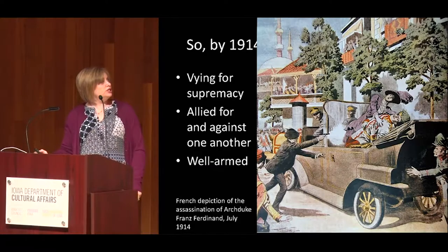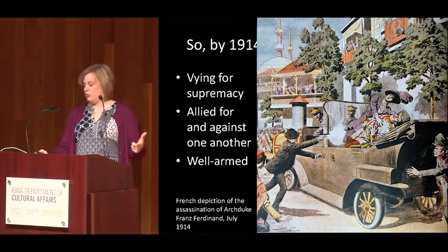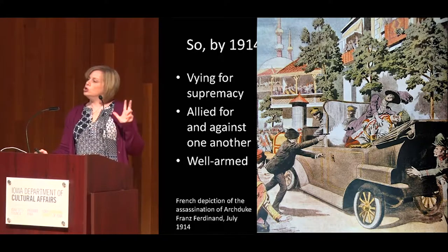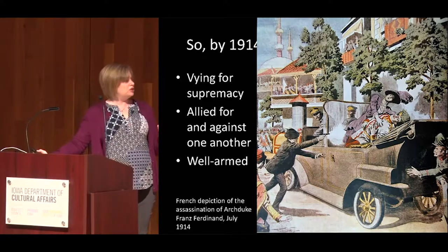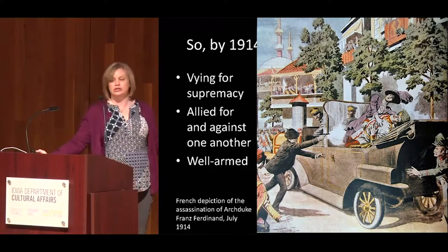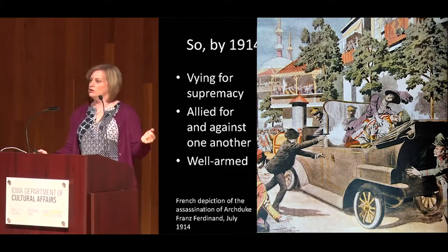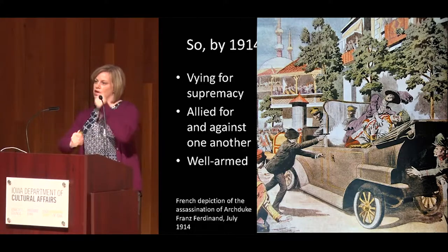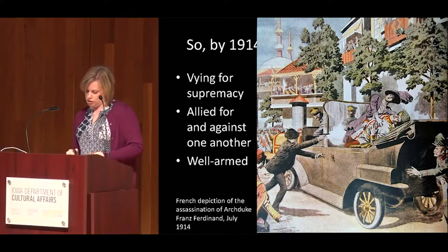So by 1914, European nations were: one, vying for supremacy; two, allied against and with one another; and three, really well armed. So when Archduke Franz Ferdinand of the Austro-Hungarian Empire and his wife Sophie are assassinated by a Serbian nationalist, it's enough to kick off the war. People are upset, the alliances shift into place, one thing leads to another, and you have a cascade of countries declaring war on each other.